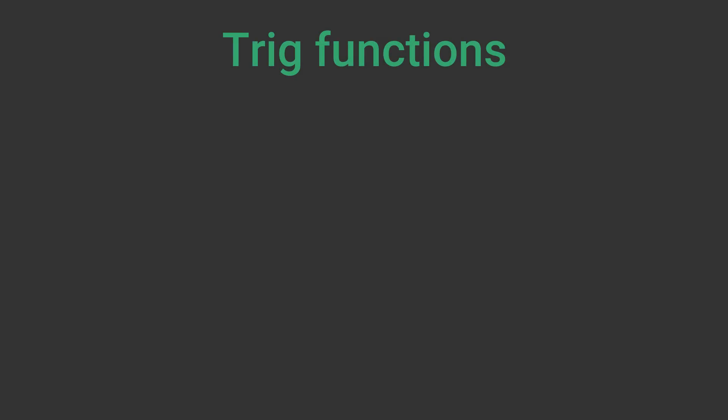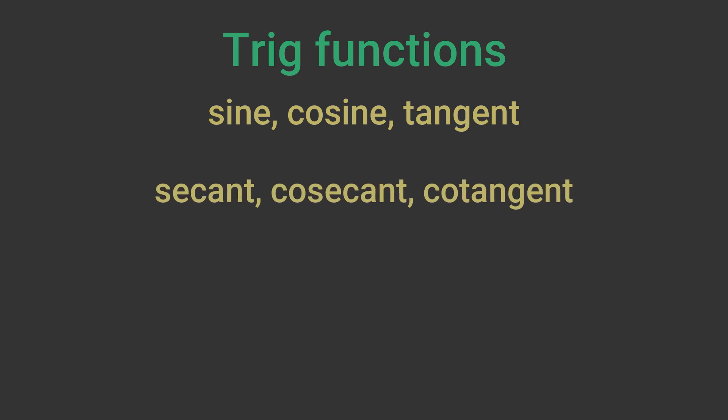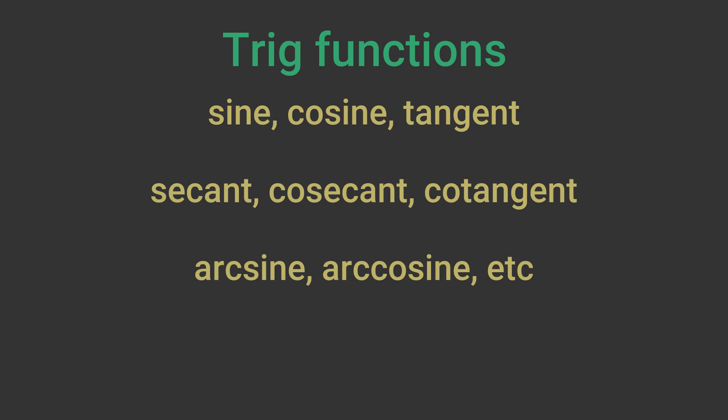You probably know of the three main trigonometry functions: sine, cosine and tangent. You might also have heard of some extra trig functions called secant, cosecant and cotangent. And you might have seen that the inverse trig functions are sometimes referred to as arcsine, arccosine etc. But where do these names come from? In this video we will look at the origins of these names.